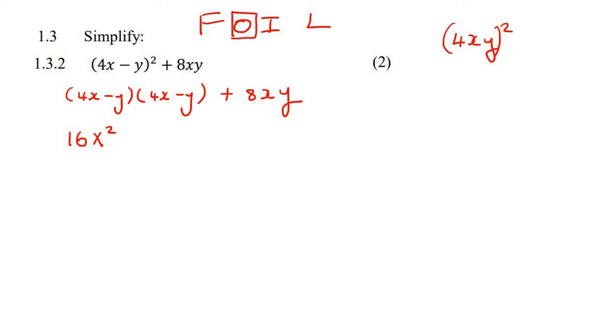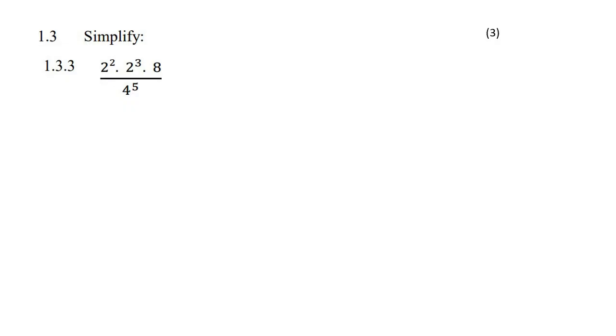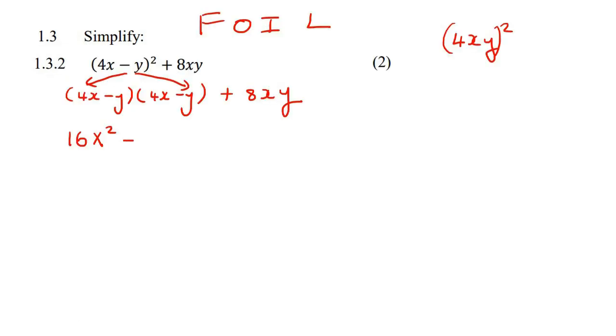Then you take the O, which means outside and outside, which is the most outer ones. So that's the one on this side and this side. It's the two that are on the very outside. And so if you multiply those two together, you're going to get minus 4xy.